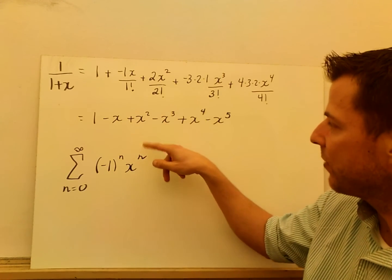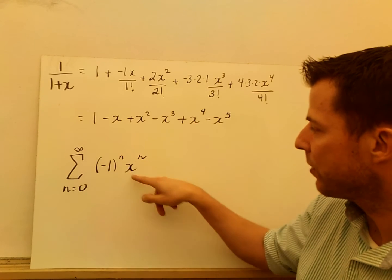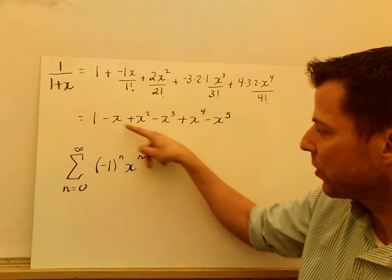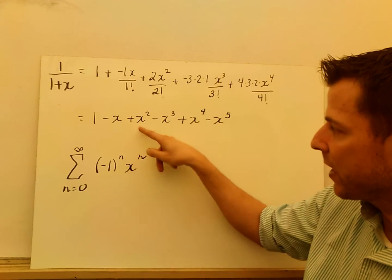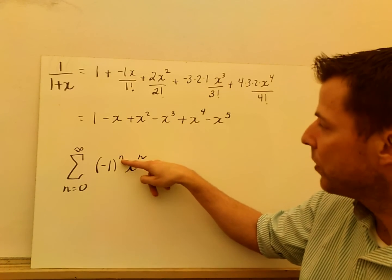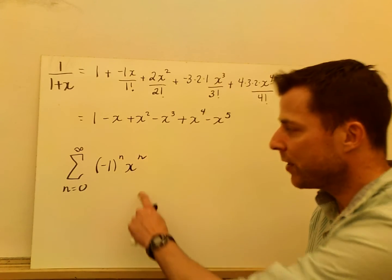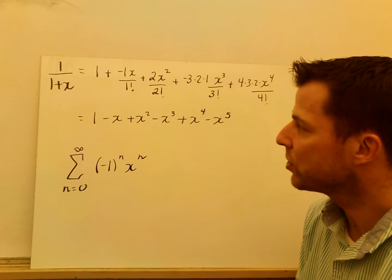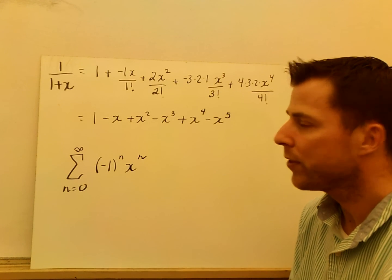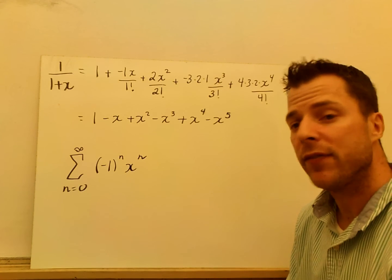And then it's just x to the n, right? This is the third term, fourth term. Zero term is just negative 1. First would give you x, negative x squared, and squared would give you just x squared. So that's the sum that represents that function f of x with the center of 0.